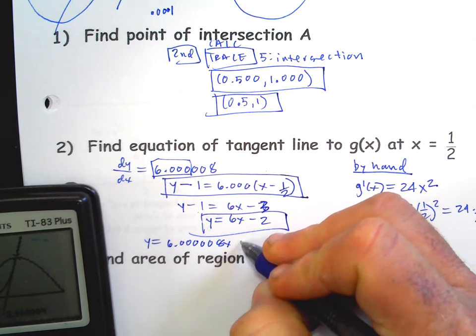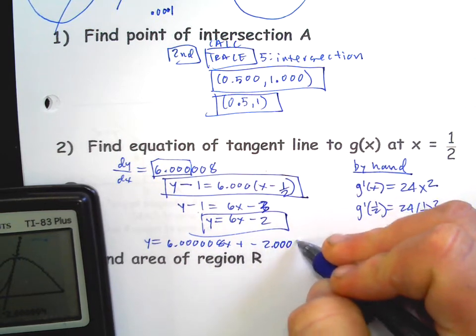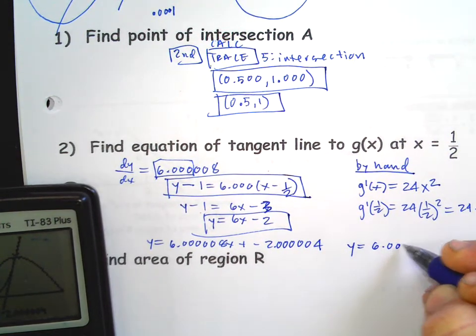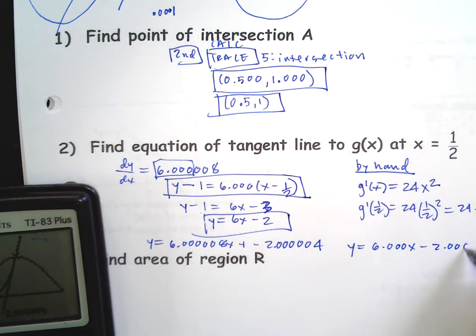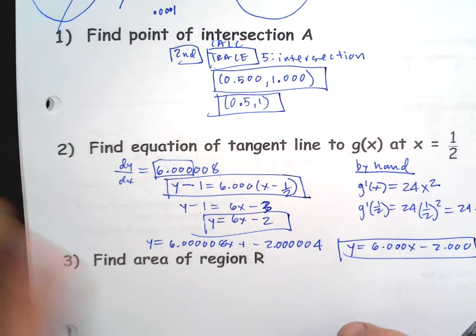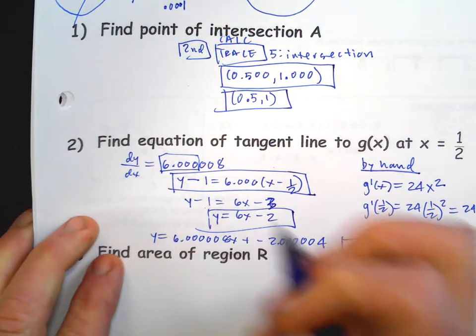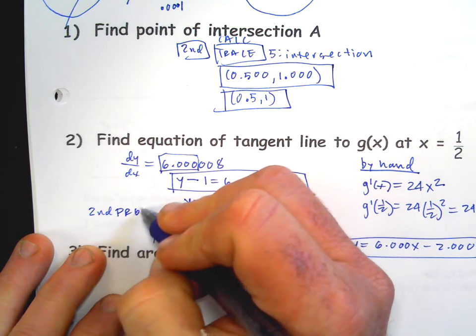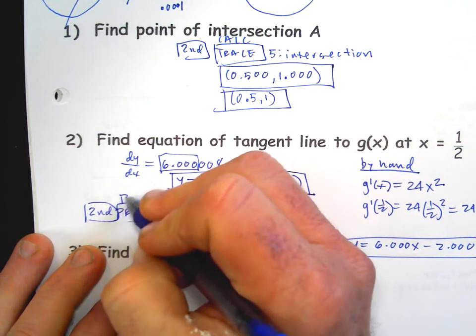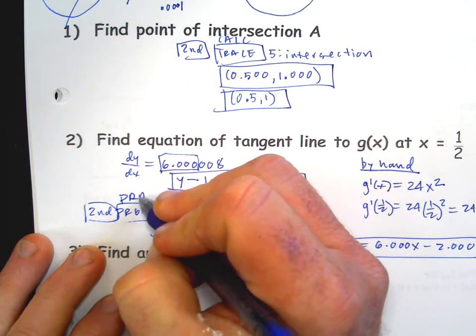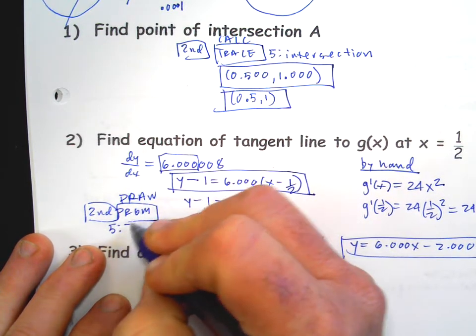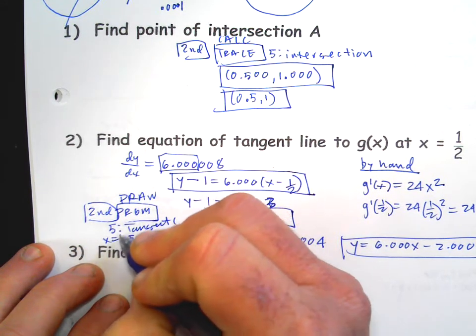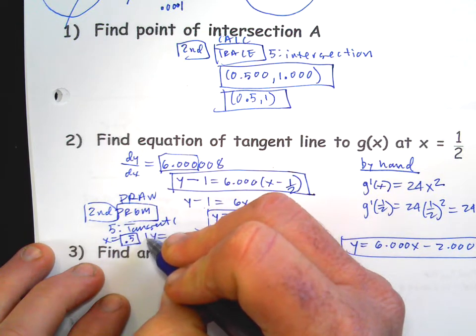And there it goes. It draws it in. At least it looks right. And that gives you y equals six point zero zero zero zero zero zero zero eight x plus negative two point zero zero zero zero zero zero zero four. Now if we wrote it in three decimal accuracy it would be that. So it's up to you. Anyways, that's fast. So if you need equation of tangent line that's a nice way to do it. Second, it was under program which gives you the draw menu, and then you pick option five tangent, and then you type in the x location you want and enter.